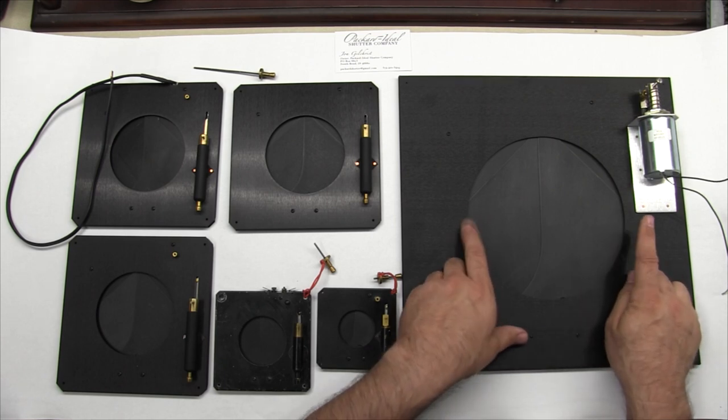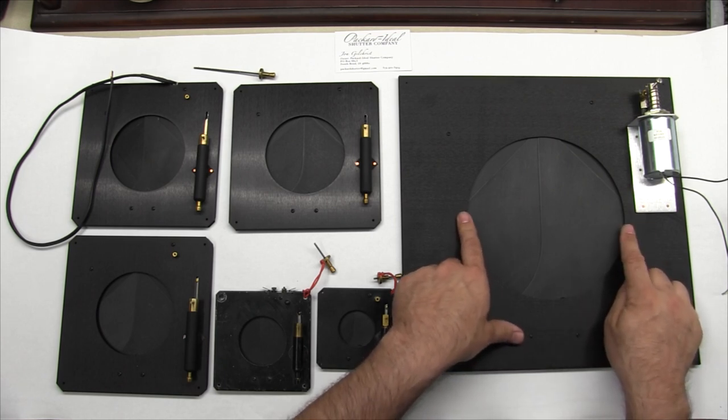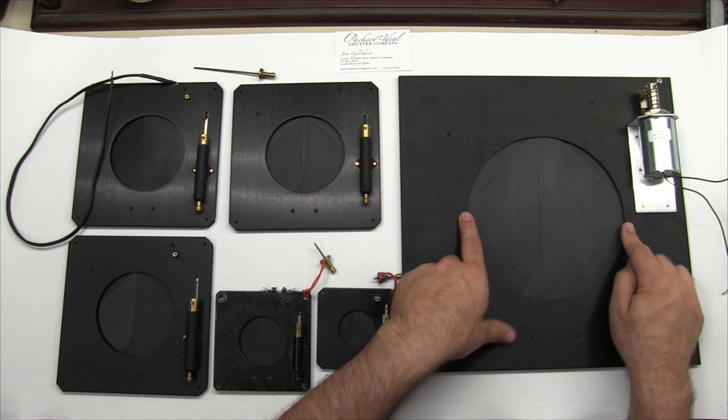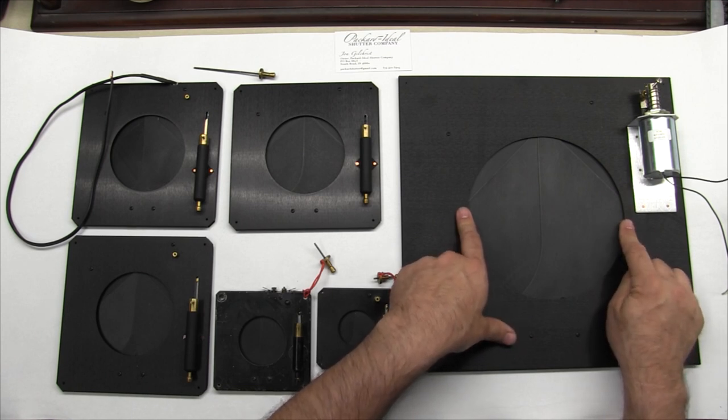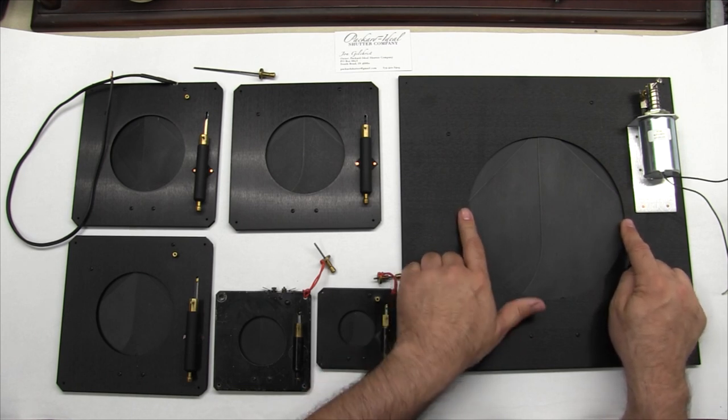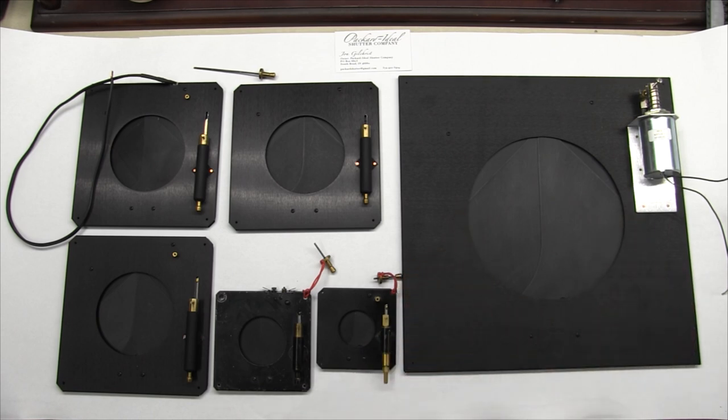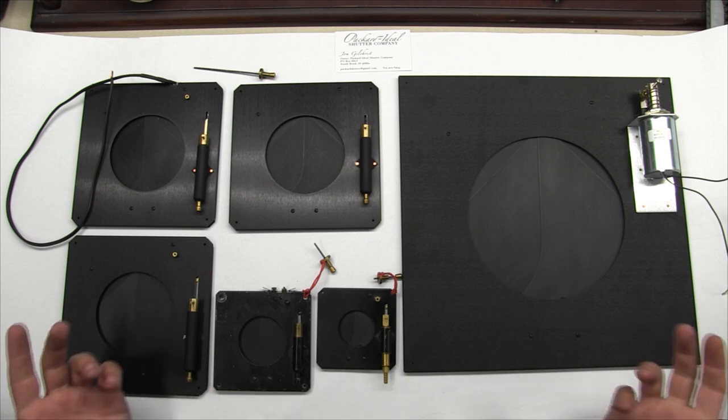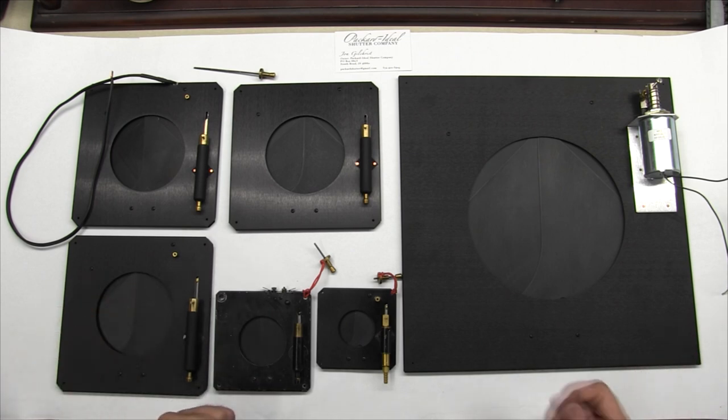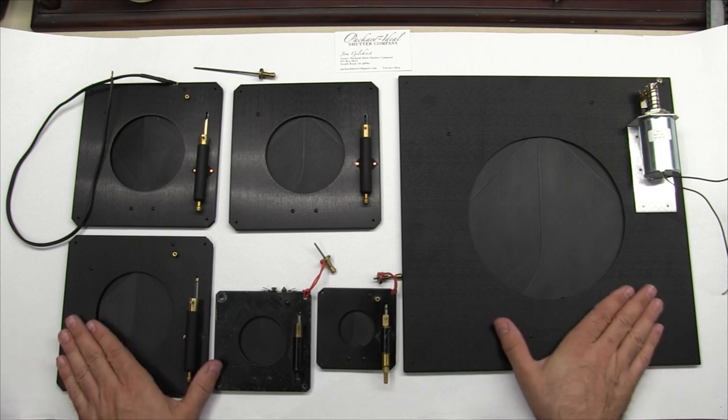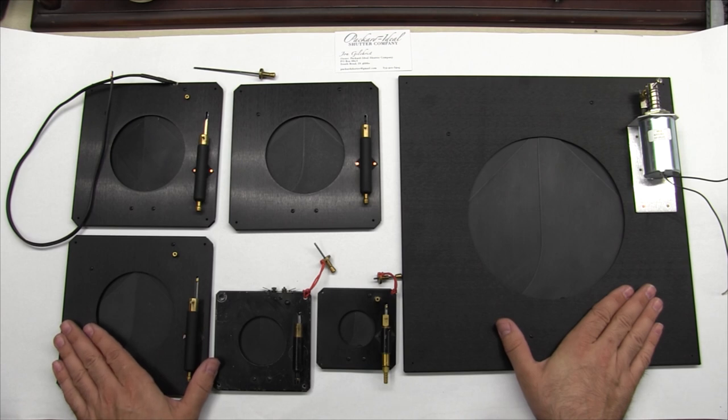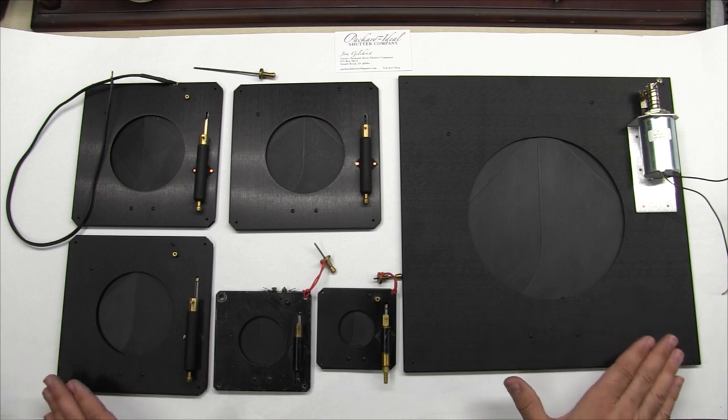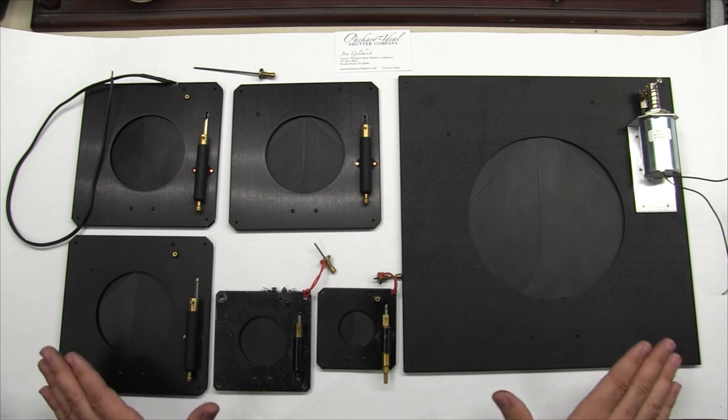Seven inch is not the biggest we make. I have parts to make eight inch shutters and information about making eight and a half inch shutters and according to company history we have made up to eleven inch shutters. So the geometry scales and we can make larger shutters as needed but this is kind of a good representation of the range of sizes of products that Packard Ideal Shutter Company currently manufactures.